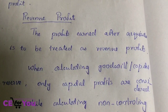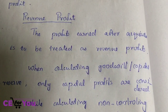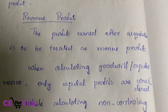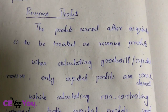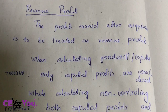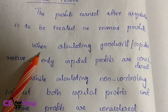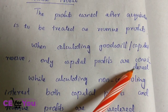In the consolidated statement, we calculate goodwill and non-controlling interest. When calculating goodwill or capital reserve, only capital profit is considered.